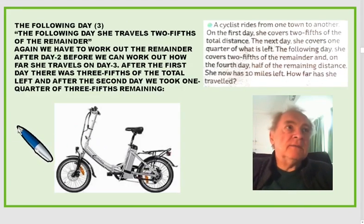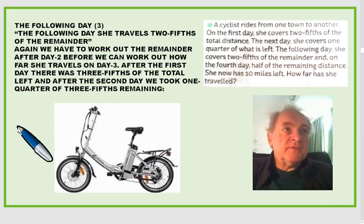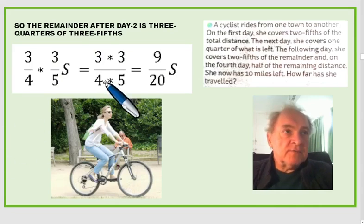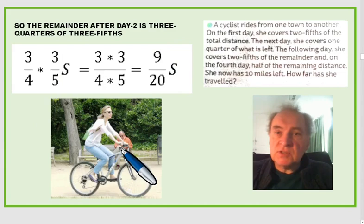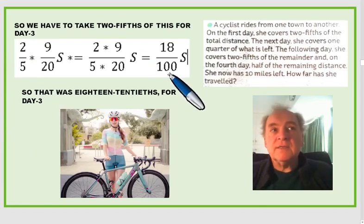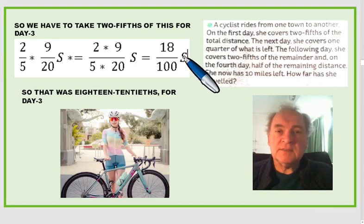The following day, day three, she travels two-fifths of the remainder. We have to work out what's the remainder after day two before we can work out how far she travels on day three. After the first day there was three-fifths of the total left, and after the second day we took one-quarter of the three-fifths. So the remainder after day two is three-quarters of three-fifths, which is three times three over four times five, giving nine-twentieths. That's what she's got left after day two. So on day three she travels two-fifths of nine-twentieths, which is eighteen over one hundred — she's travelled eighteen-hundredths of the total distance s on day three.